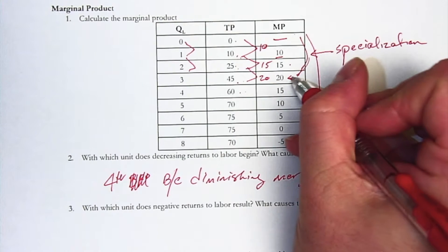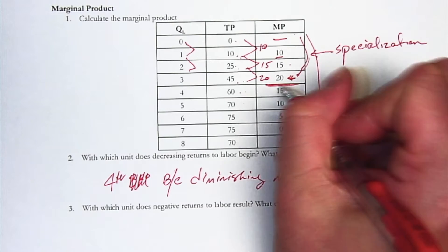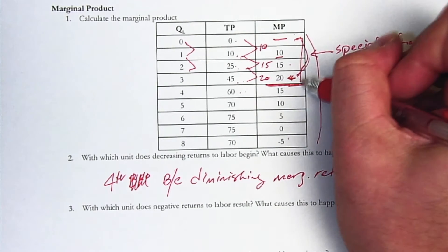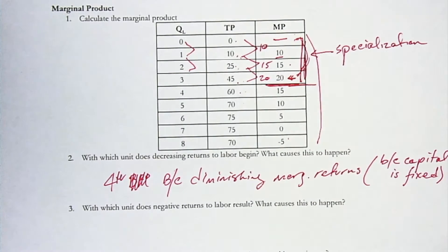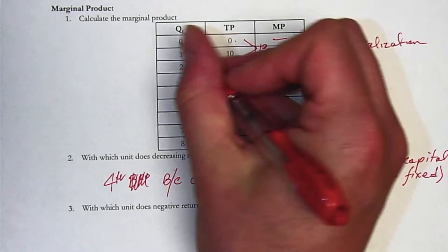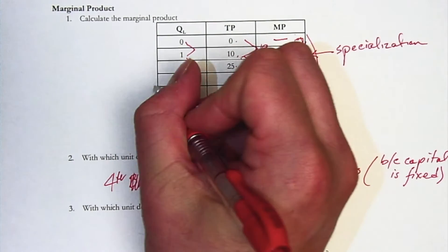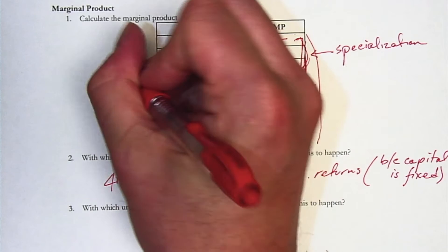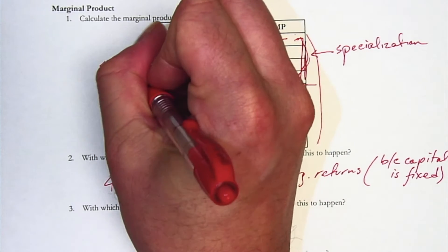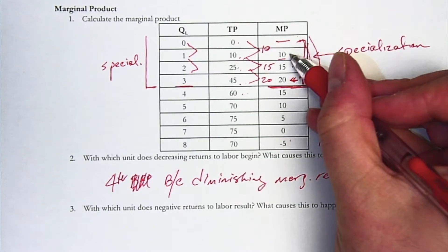Can't read. So it's this, it's not with this worker, it's after that worker. So all of these workers show specialization between the zeroth worker and the third worker. So all of these are specialization because you get 10, 15, 20.